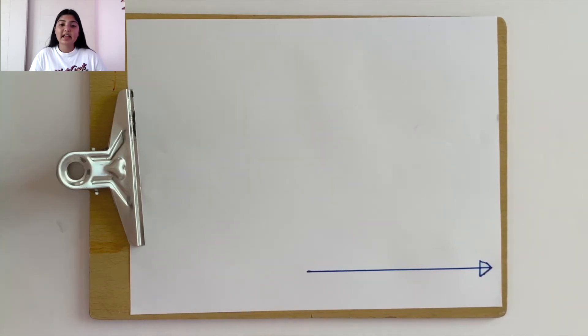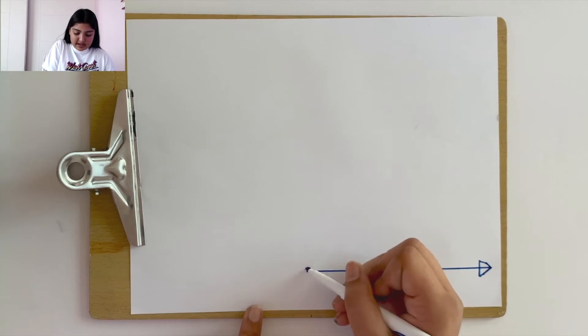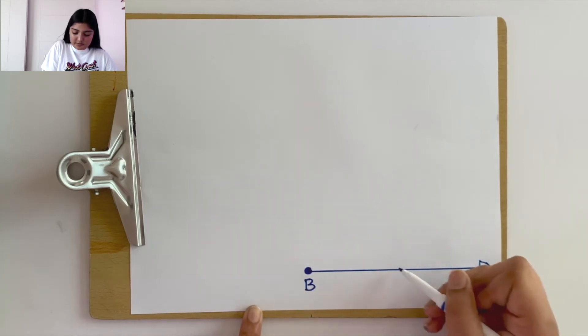Next, we can label two points on the line. Let's make one point here and label it as B.